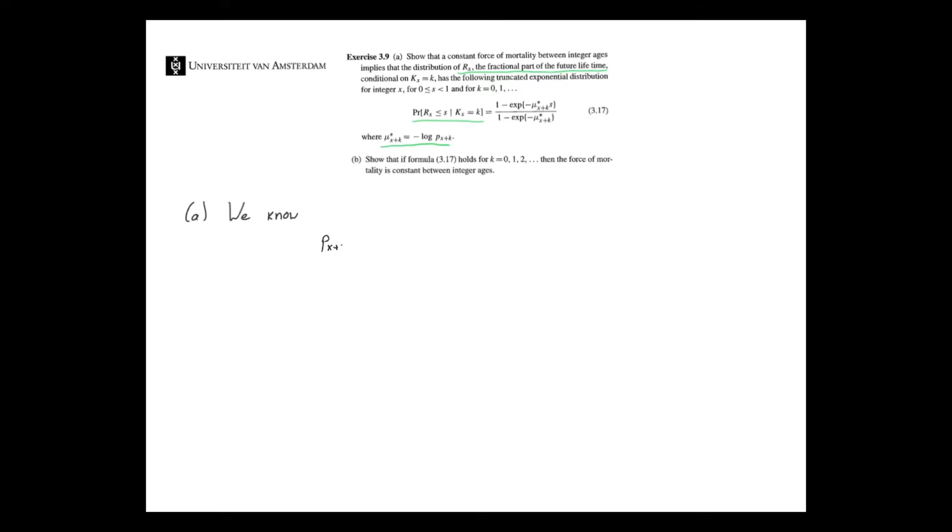We have some conditional probability involving this fractional part and the integer part Kx, and we have to show that it equals this expression on the right-hand side. Now, what is this μ* x+k? It is given as equal to minus the log of the survival probability of somebody aged x plus k. And we know a formula that relates the survival probability with the force of mortality: the probability of surviving one year for somebody aged x plus k, where x is an integer and k is 0, 1, 2, 3, also an integer.